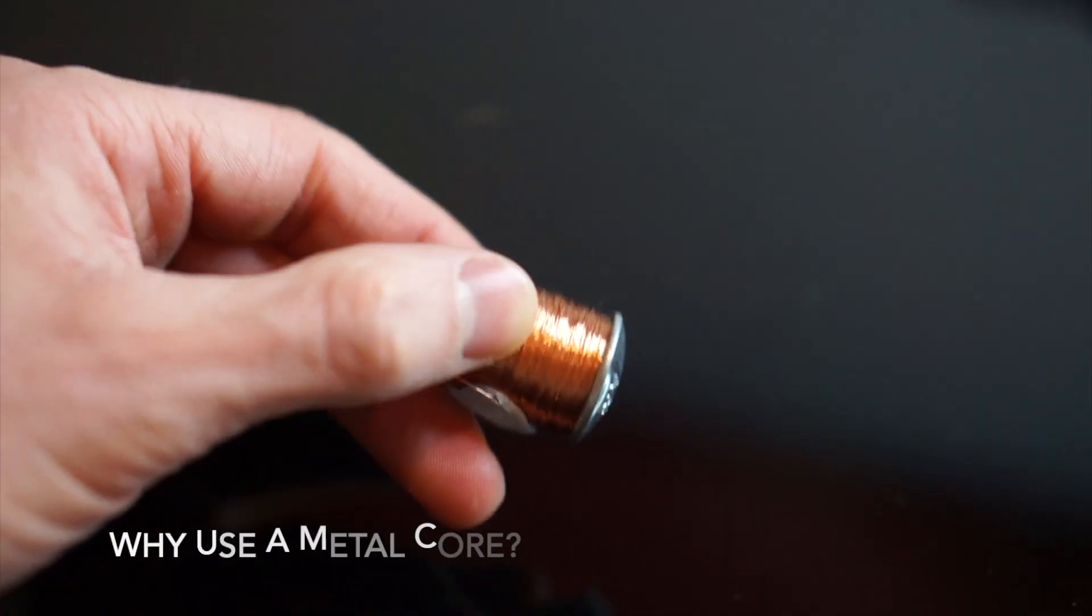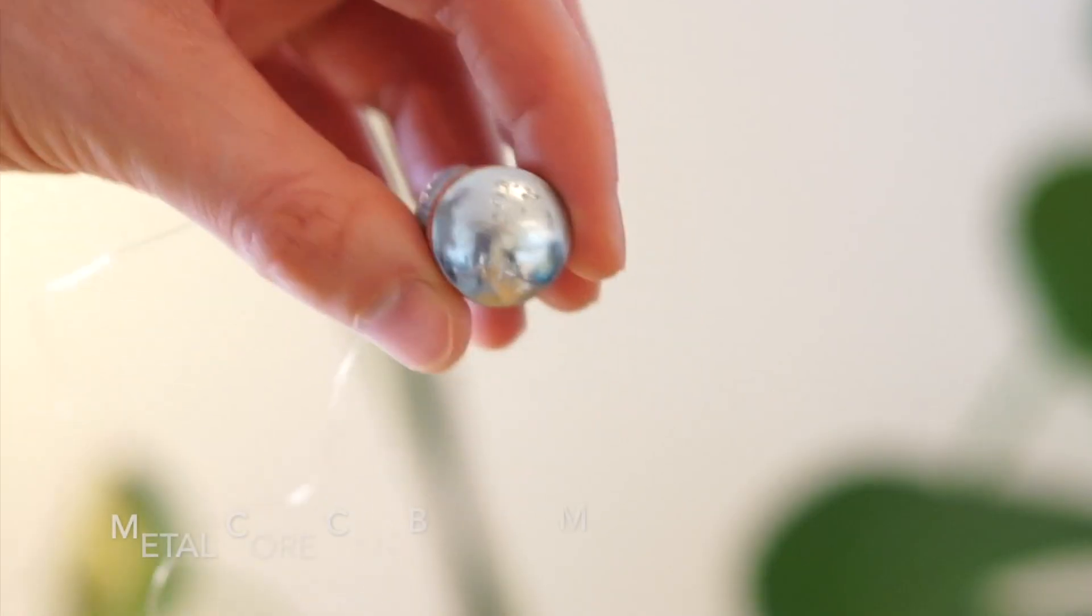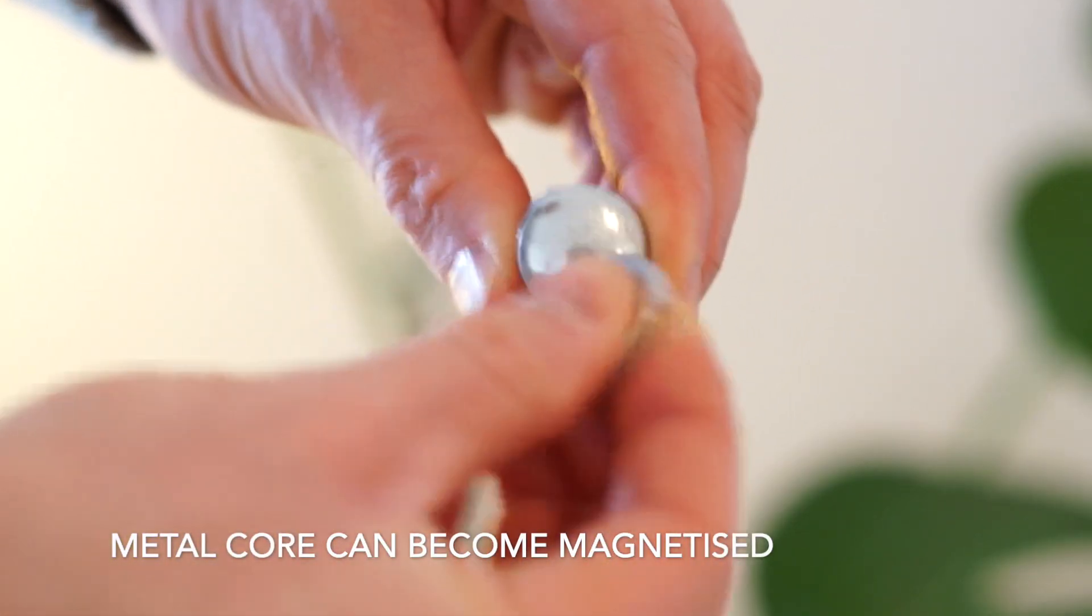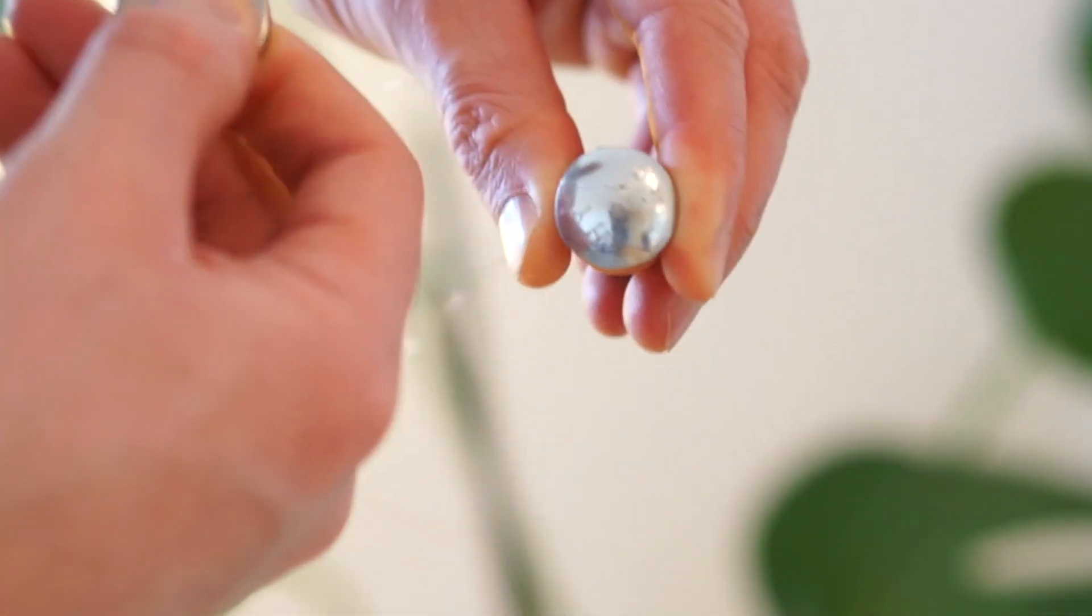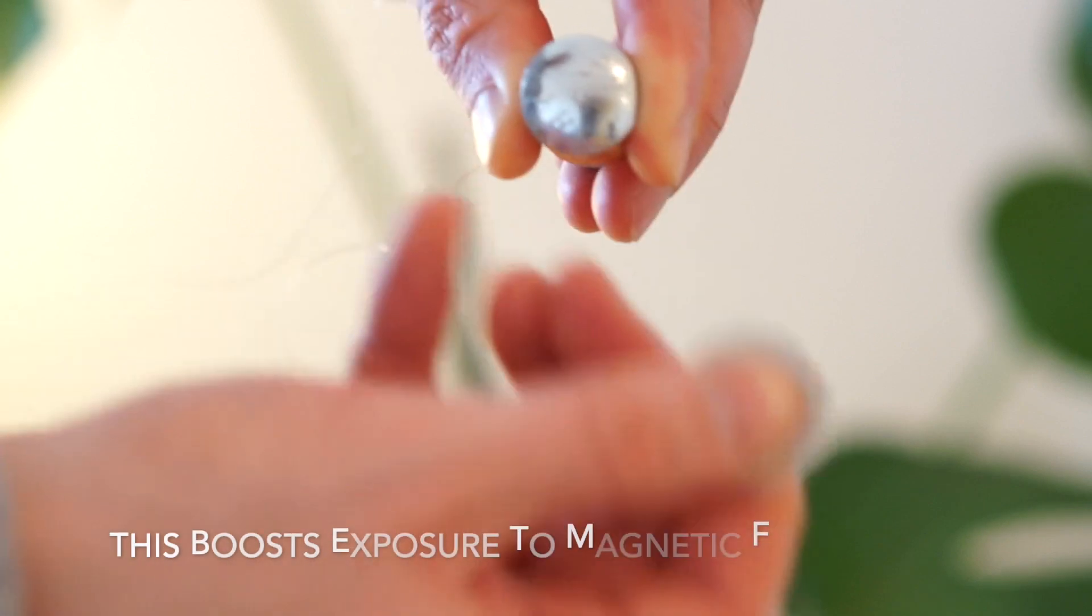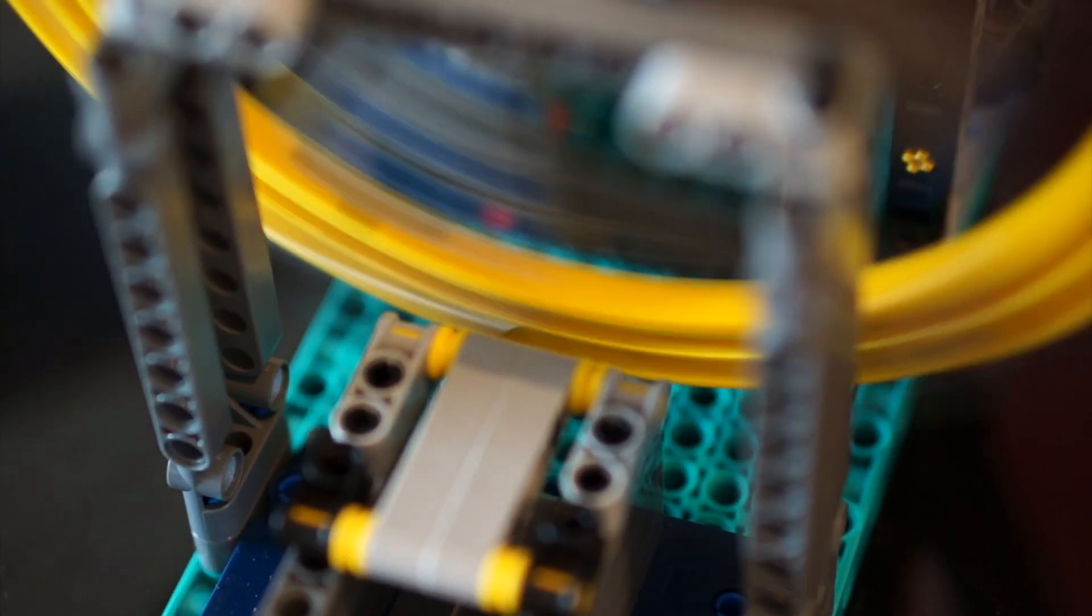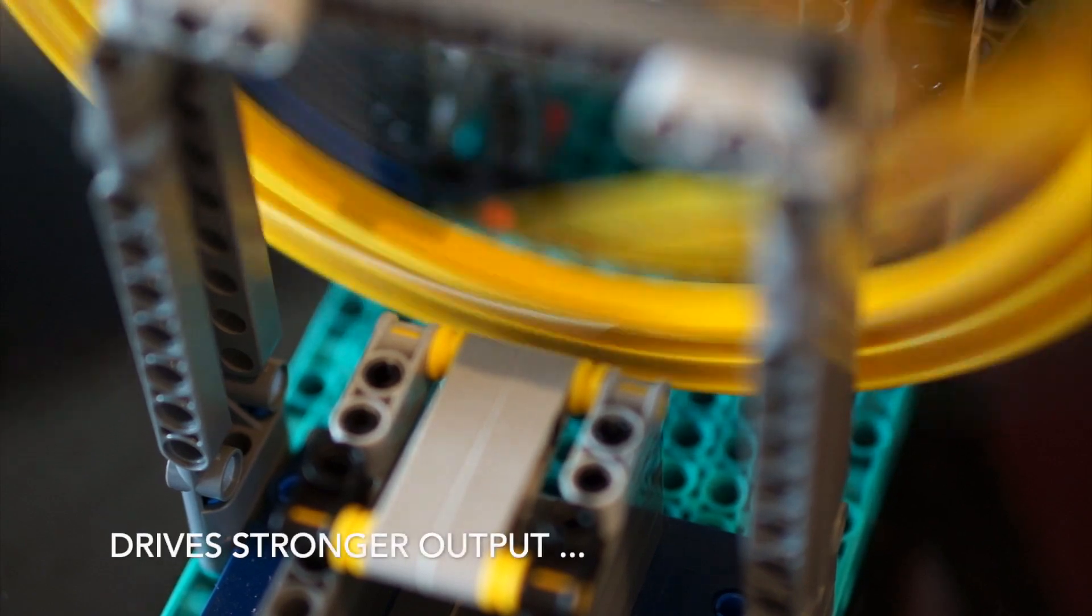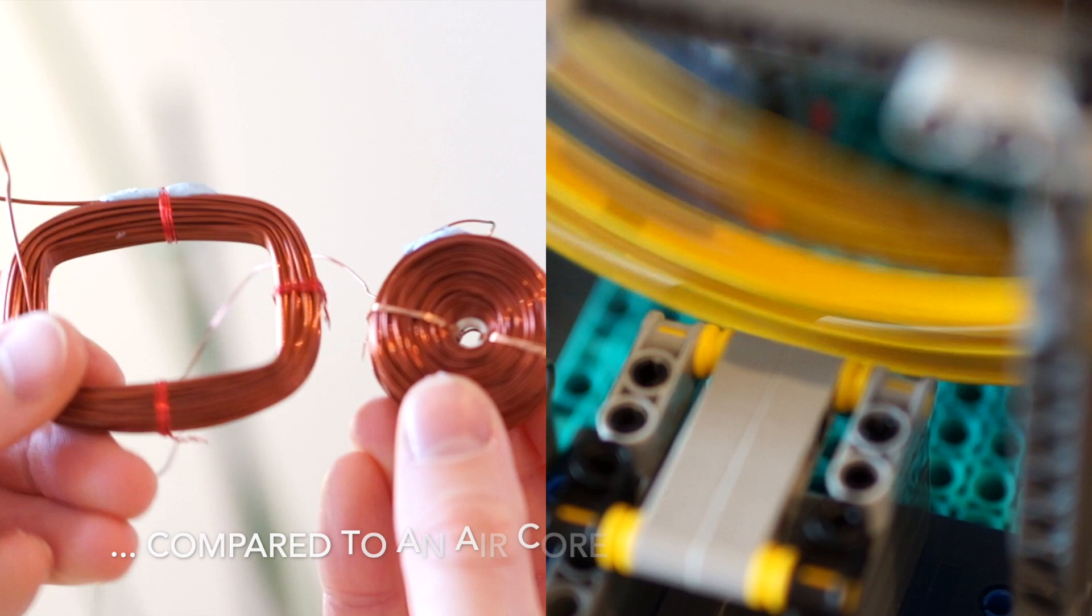So at this point some of you might be wondering why use a metal core at all? Well the reason is that a metal core is able to become magnetized by the magnets as they travel in close proximity to the metal. Because the wire loops are very close to the metal this effectively boosts their exposure to the magnetic field helping to drive a stronger output. So with a metal core we can drive a stronger output than we would with an air core.